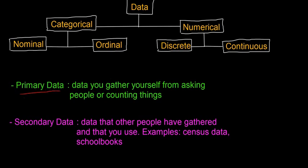So primary data, the first one, is data that you gather yourself from asking people or from counting things. So if you're doing your own survey, if you're doing your own research, then you're gathering primary data.